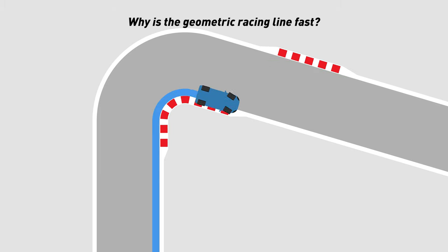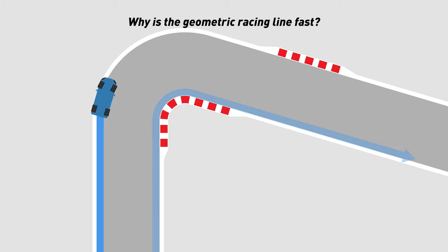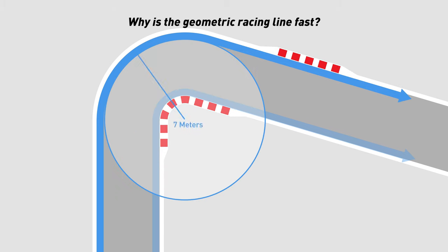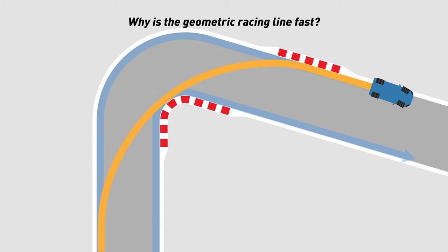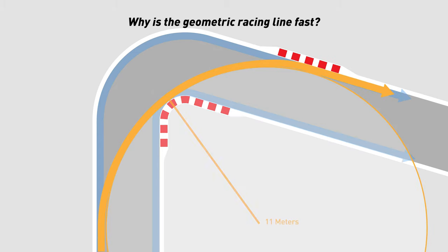Imagine that if the car runs completely against the line on the inside of the track, although the cornering route is relatively short, the turning radius will be very small, and the car will go through the corner at a slower speed. On the other hand, if the car runs completely against the line on the outside of the track, it will have a slightly larger turning radius, a higher cornering speed than the inside line, but a longer cornering distance. Along the geometric racing line, the car maximizes turning radius and cornering speed, and reduces cornering distance compared to the innermost and outermost lanes.